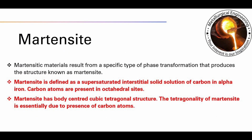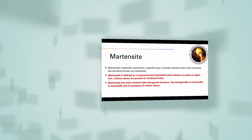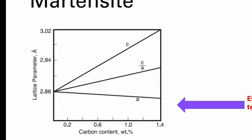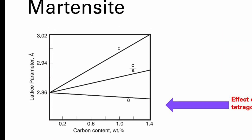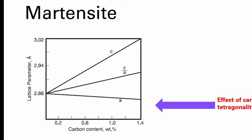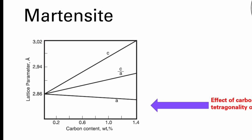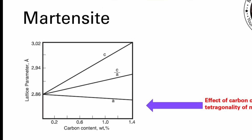Martensite is defined as a supersaturated interstitial solid solution of carbon in alpha iron. Carbon atoms are present in octahedral sites. Martensite has a body-centered cubic tetragonal structure. The tetragonality of Martensite is essentially due to the presence of carbon atoms. The effect of carbon content on tetragonality of Martensite is shown in this figure.